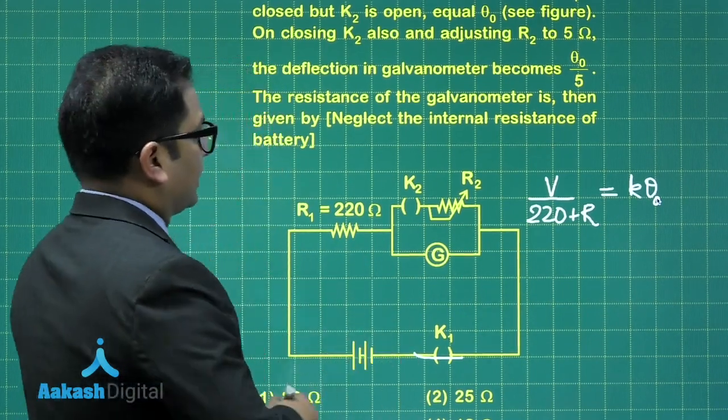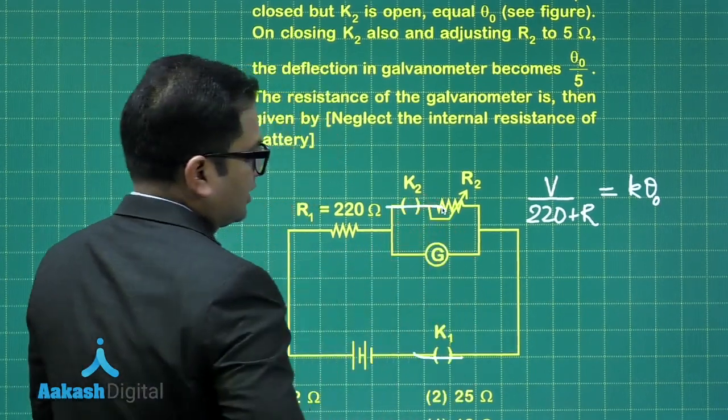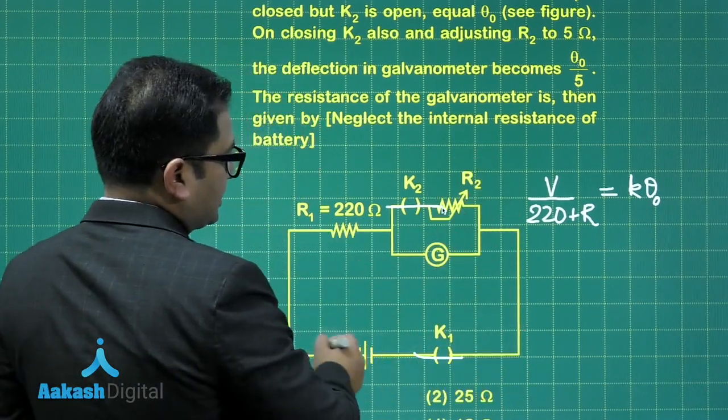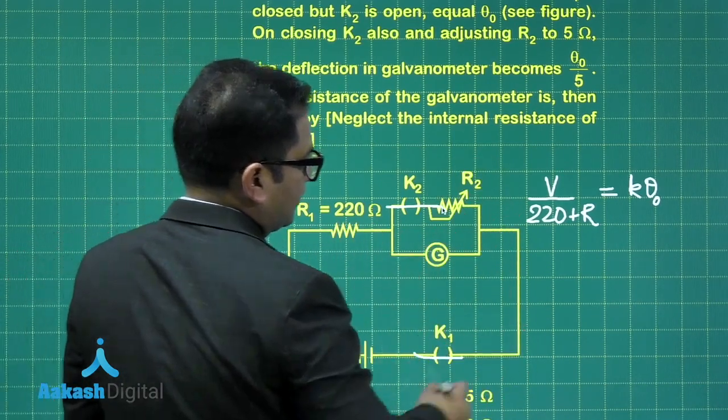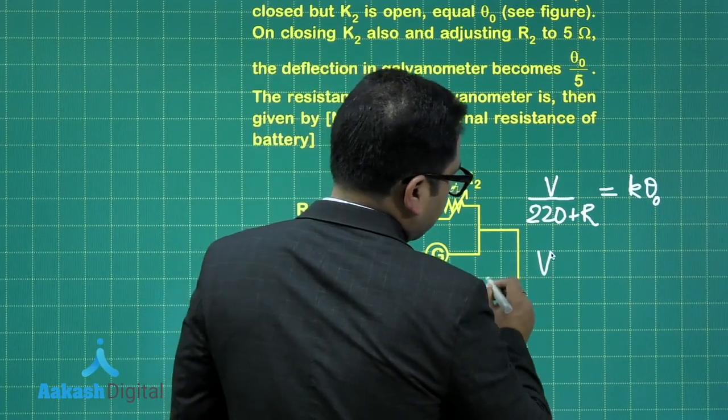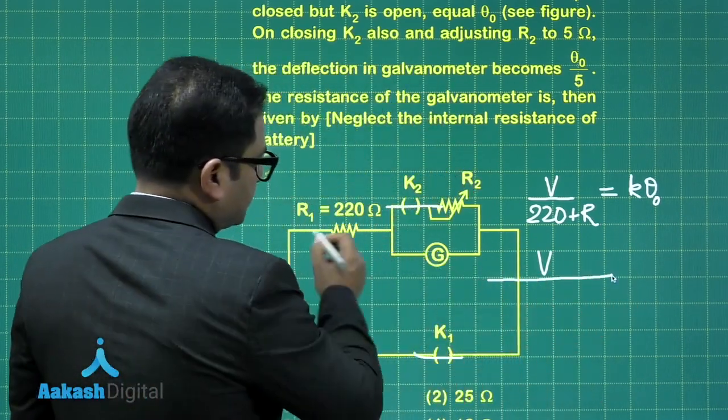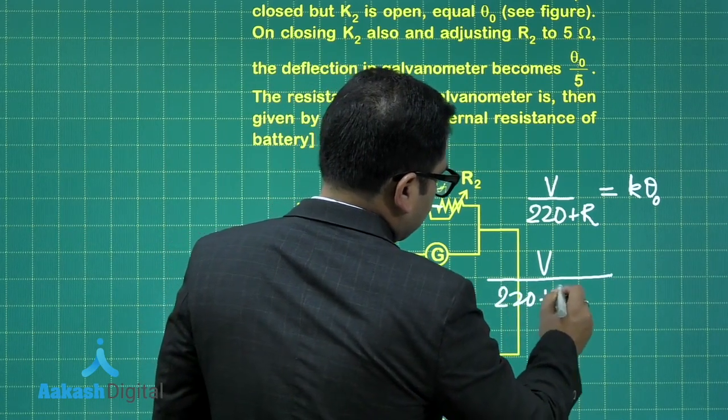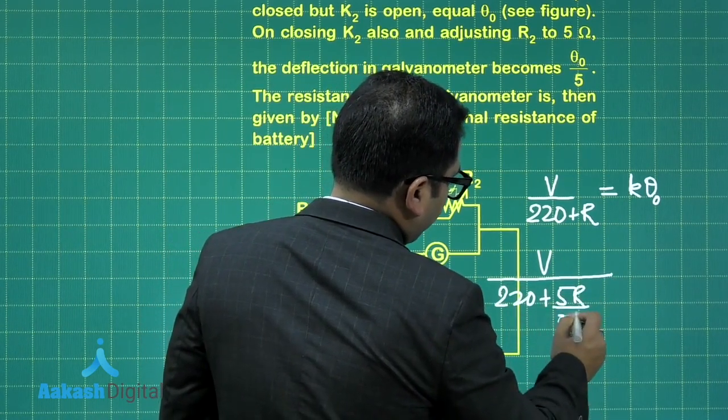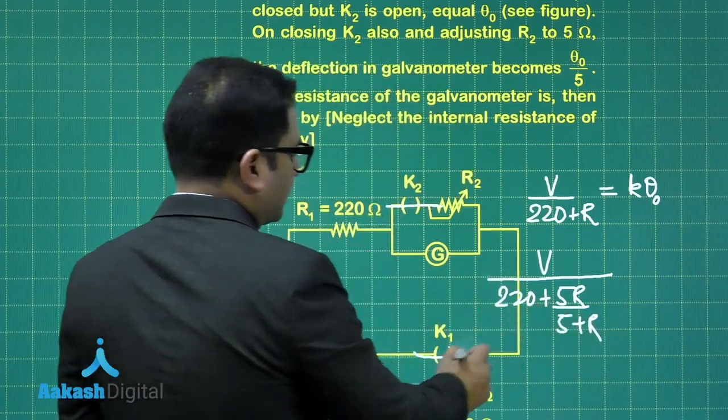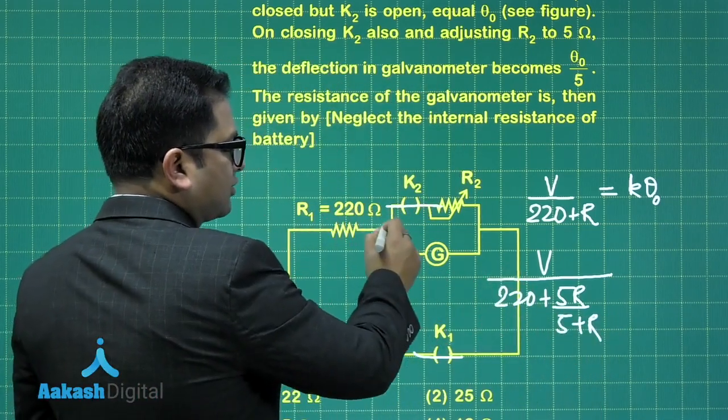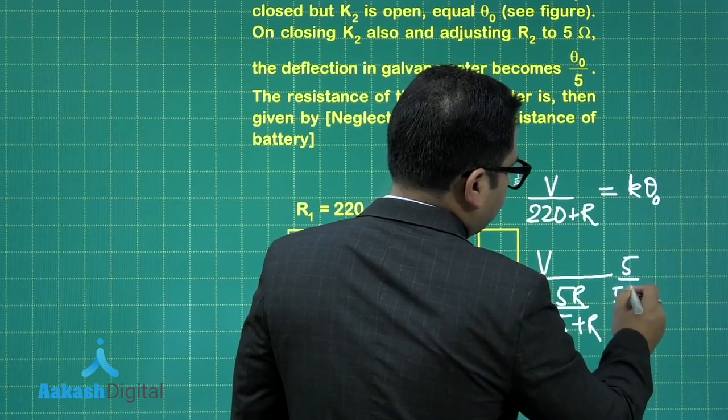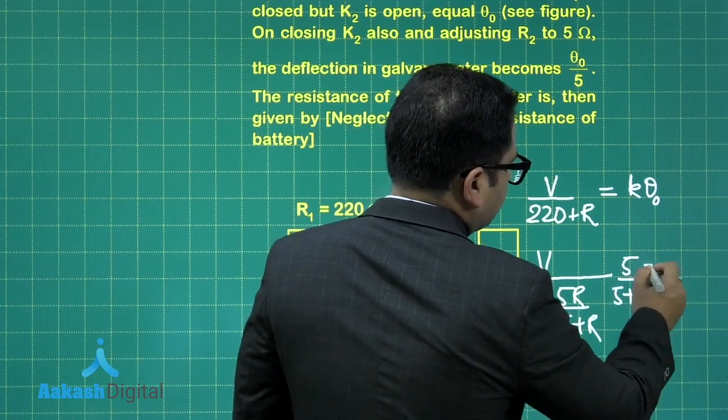Now when K2 is closed as well and resistance is of course 5Ω, let me find the current to the battery. So that's V divided by 220 plus 5r by (5 plus r), is the current through the battery. I need to calculate the current through the galvanometer, so times 5 by (5 plus r), and that is going to be equals to k θ₀ divided by 5.